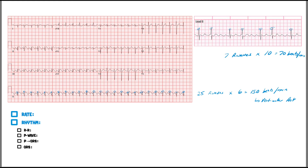We have 150 beats per minute on the main strip. Confirming with the box method: there's about two boxes between R waves — 300 divided by 2 is 150 bpm. Looking at the R-to-R interval, it's about two boxes consistently throughout: one-two, one-two, one-two. The R waves are falling right on the box lines. This is definitely a regular rhythm.